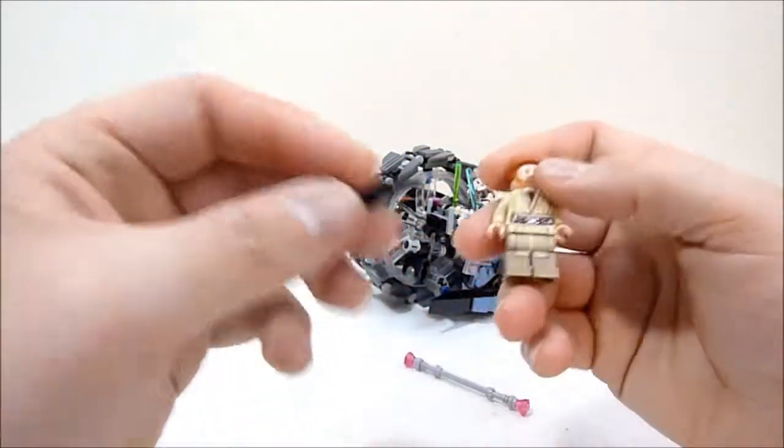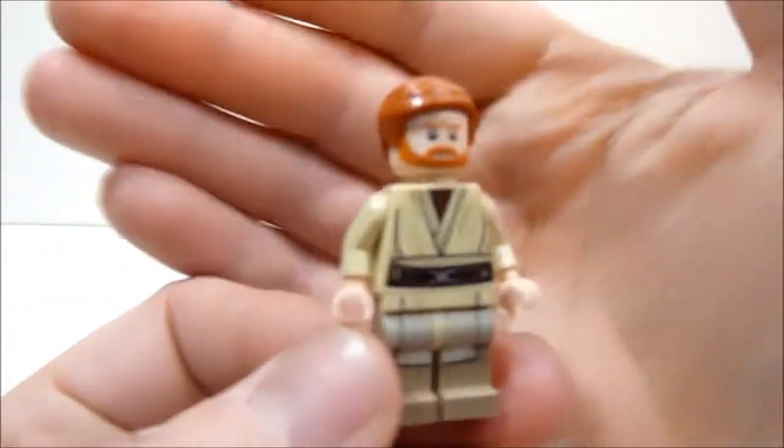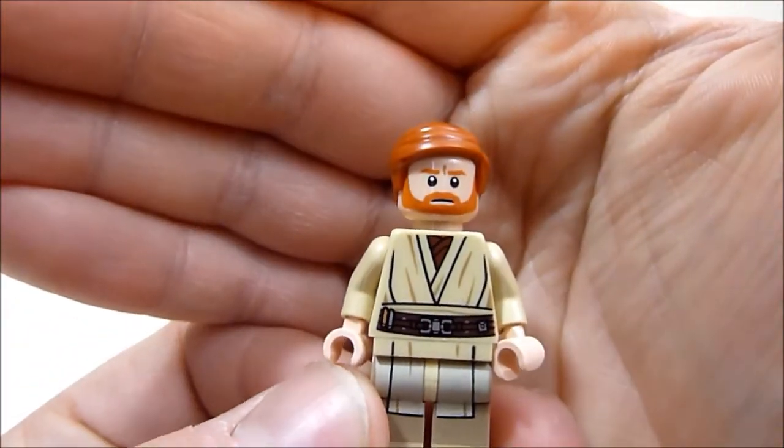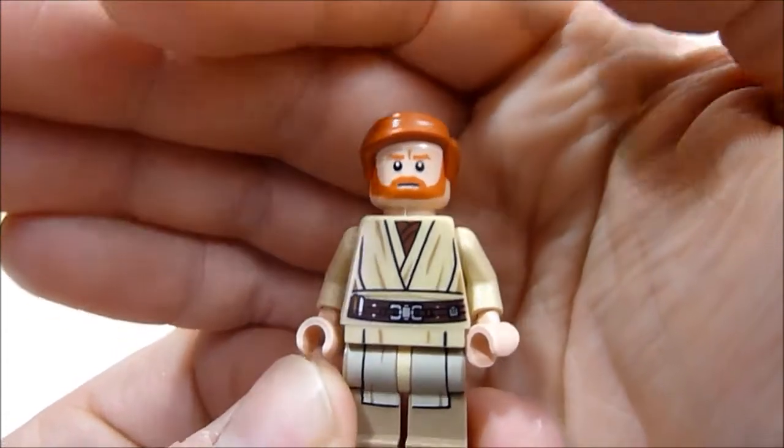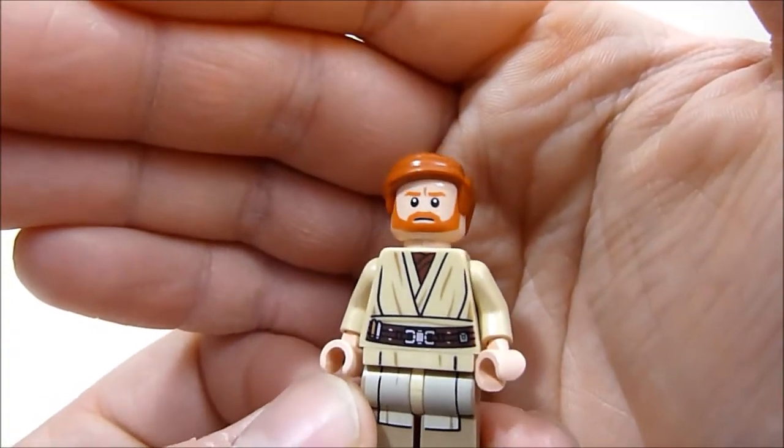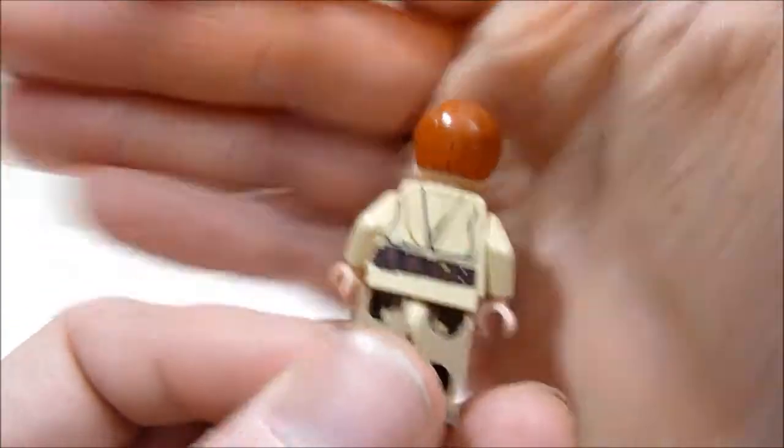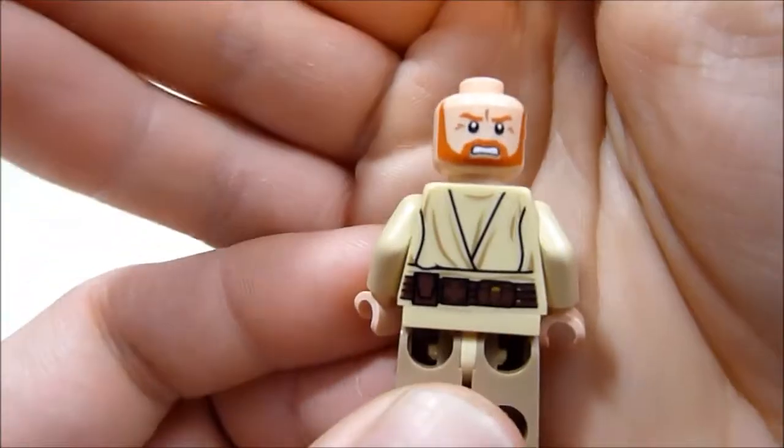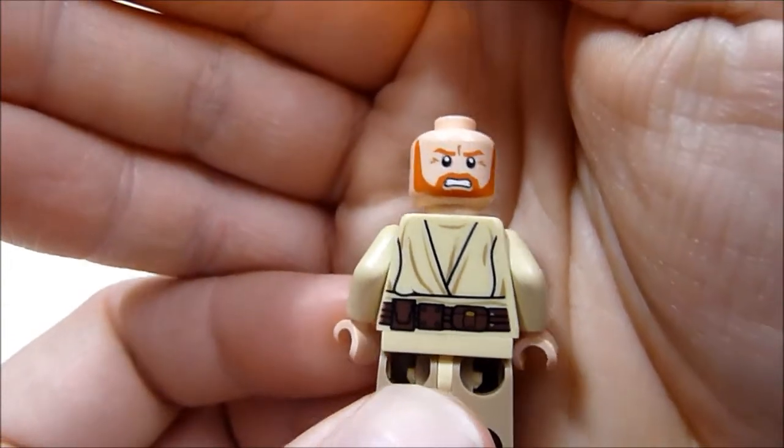He's got a little blaster going on here as well. Some of that action. And yeah, he's pretty nice looking. Very stern. Stern look upon his face. Like he knows that Anakin is just a whiny little piece of junk. And nice little belt. Very nice printing on this guy. And he's got some back printing on his face as well.